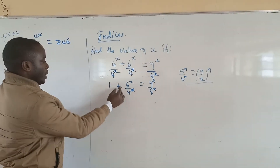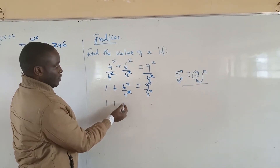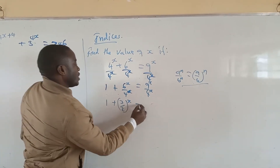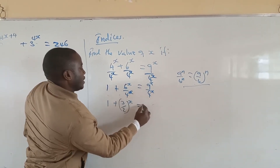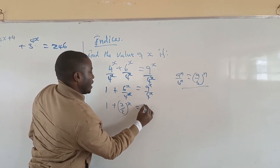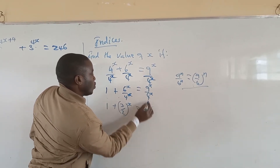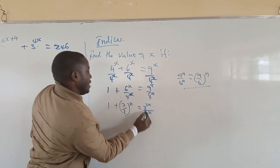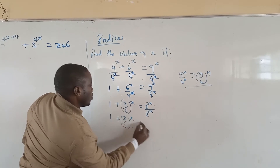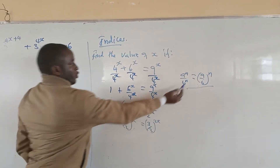Using that concept, we have 1 plus 6 over 4, which simplifies to 3 over 2, to the power x. And 9 over 4 is the same as 3 squared over 2 squared, which equals 3 over 2 to the power 2x. So we have 1 plus (3/2)^x equals (3/2)^(2x).